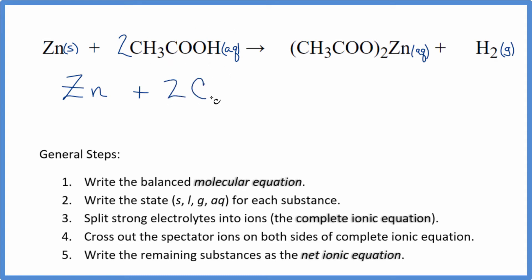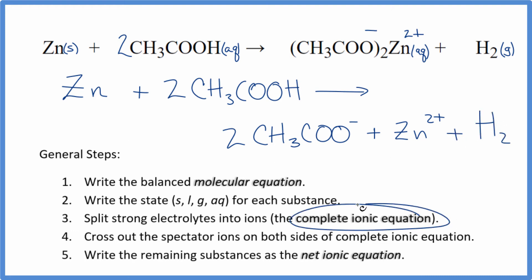This is a good one to remember when you're doing net ionic equations. For the products, the acetate ion, the whole thing here is 1 minus. Zinc is always 2 plus. So we'll have two acetate ions plus our zinc ion. And then we don't split up gases in net ionic equations, so we'll just write H2 here. So this is the complete ionic equation.